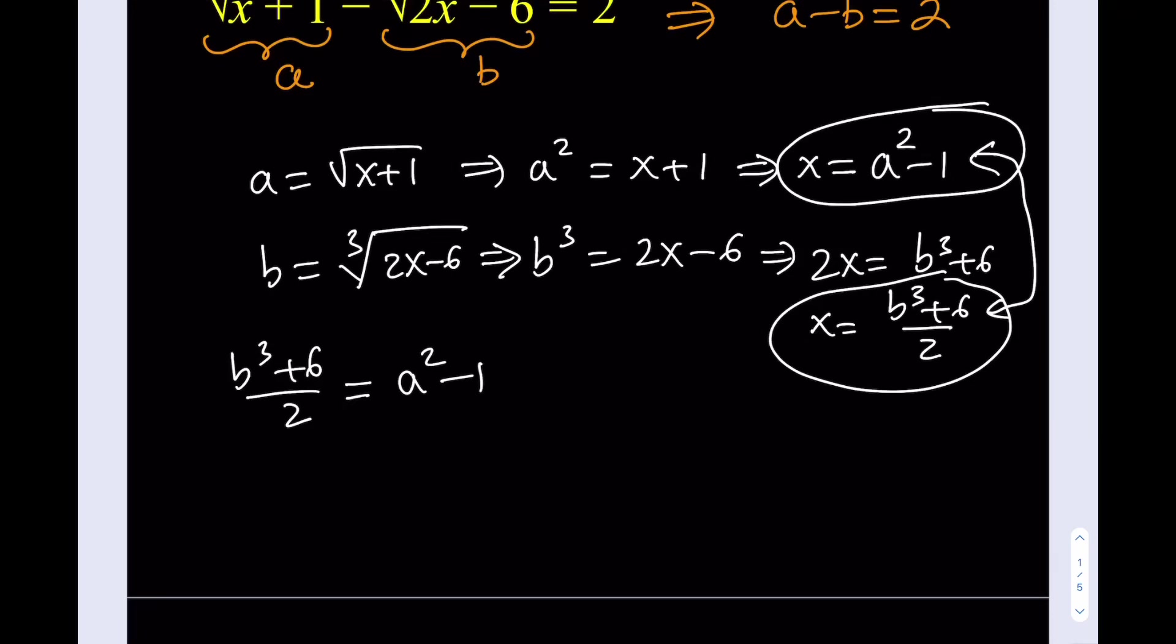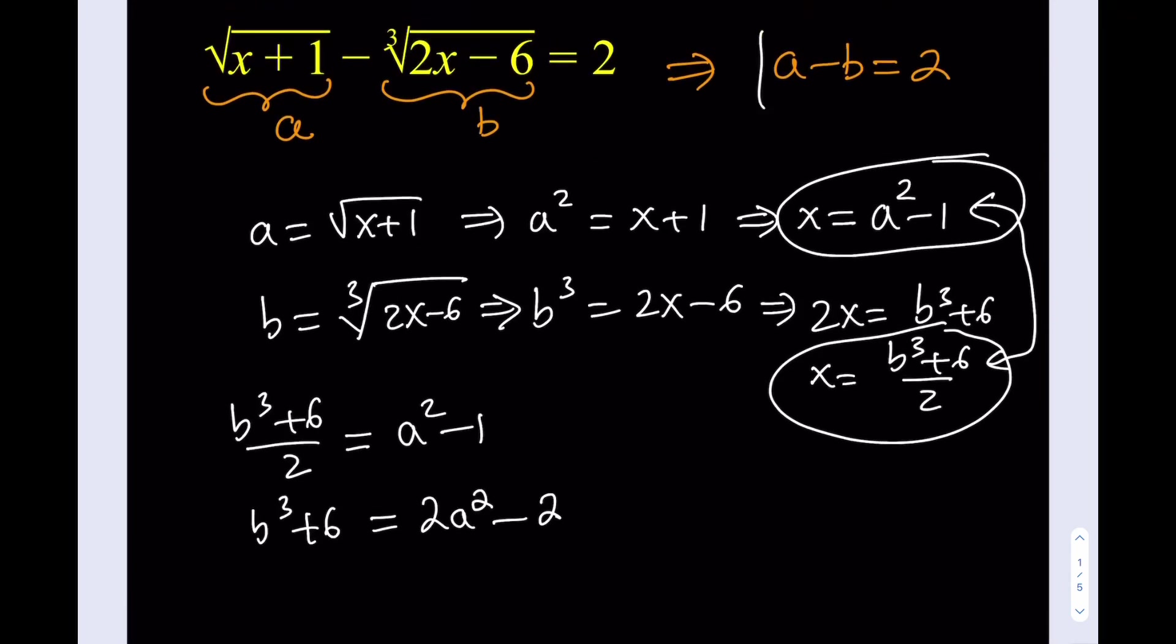So how can I proceed from here? Well, I can multiply both sides by 2. That's going to give me B cubed plus 6 equals 2A squared minus 2. Awesome. What else can I do? Well, in addition to this equation, I also have something else. Let's not forget about this. That was our first thing. So in addition to this, I have A minus B equals 2. So now, let's go ahead and consider the system.